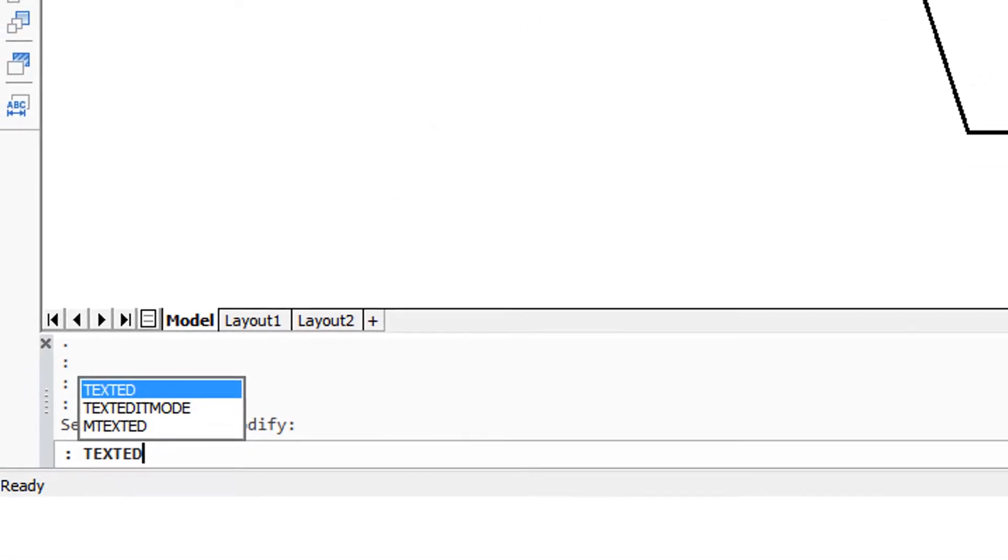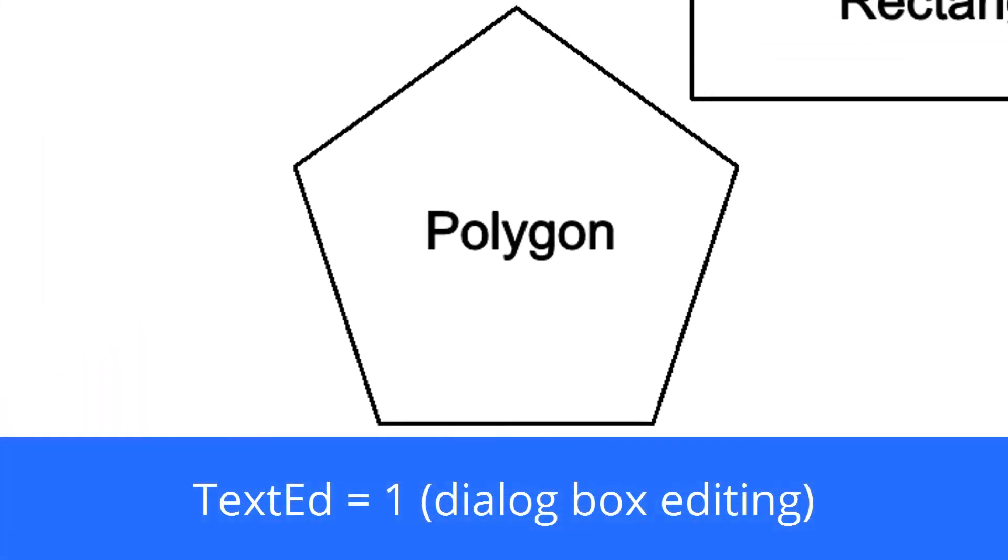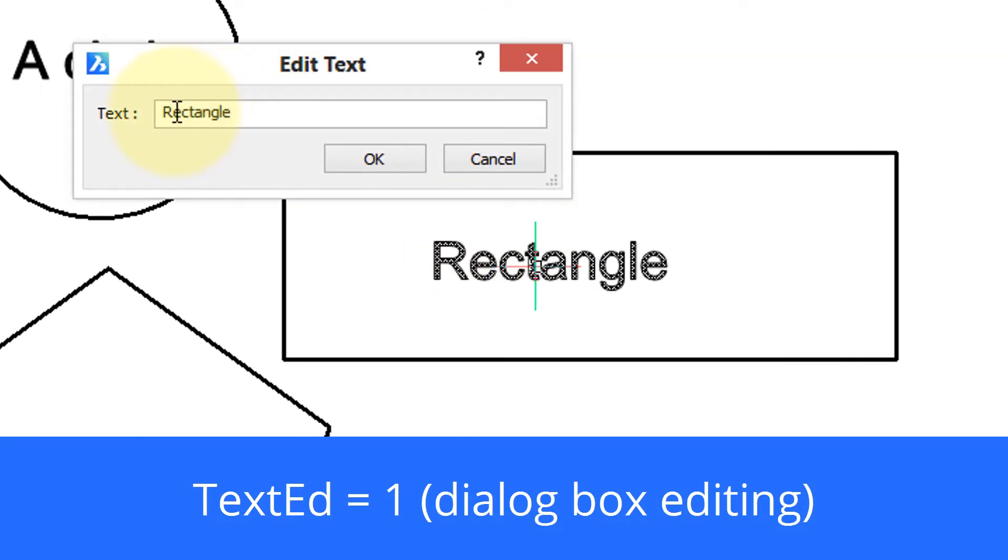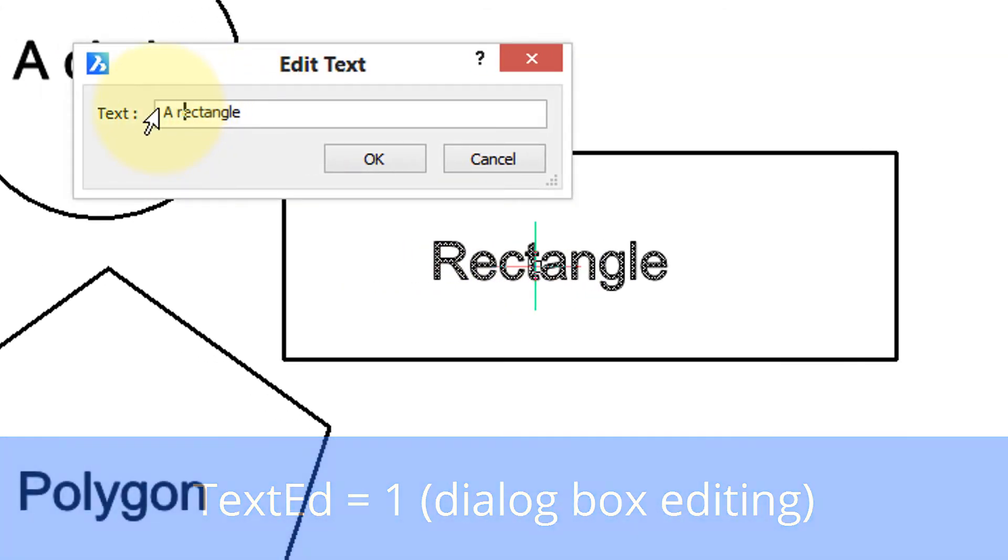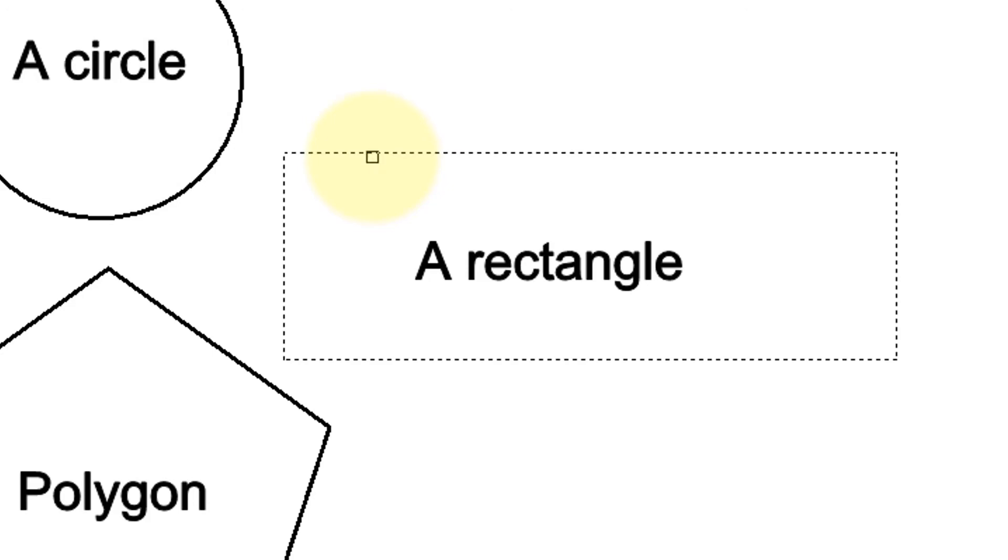Now if I enter in the TextEd variable and change the value to one, then when I double click a word up comes the dialog box. Now you might prefer the dialog box over editing in place. And that's why the TextEd variable gives you that option.